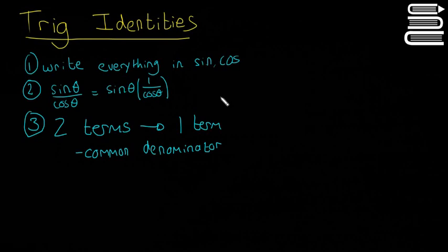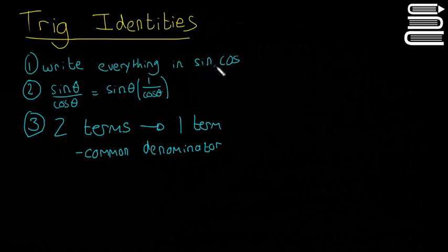In this video we're going to look at some examples using the rules we learned in the last video. It's all about trigonometric identities. Here's a quick run through of the rules. There are the trigonometric identities you have to learn off, and then this is the method you're going to use. The first step is to write everything in sine and cosine — it just makes things a lot easier.